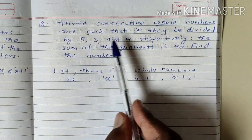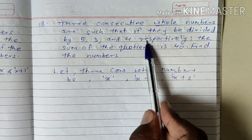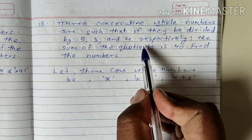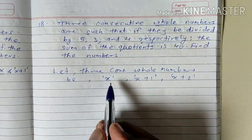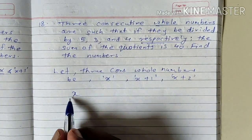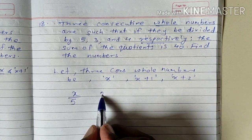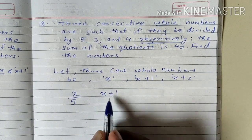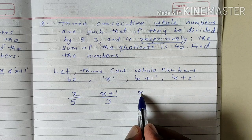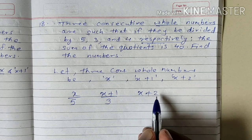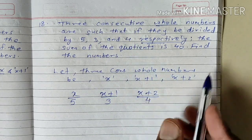What they are saying is they are divided by 5, 3, and 4 respectively. Respectively means the first number x is divided by 5, the second number x plus 1 is divided by 3, and the third number x plus 2 is divided by 4.